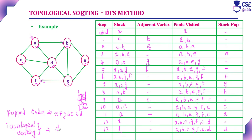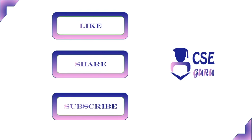Reversing the popped order gives the topological sorting sequence: D, A, C, B, G, F, E. This is the topological sequence — the linear ordering of vertices for this given graph. This is the complete procedure for implementing topological sorting using the DFS method. Go through the steps once again to understand the logic better. Thank you for watching this video.